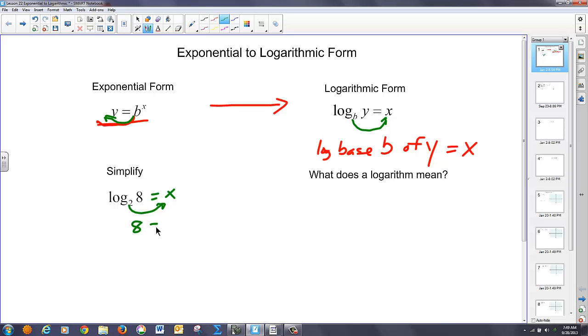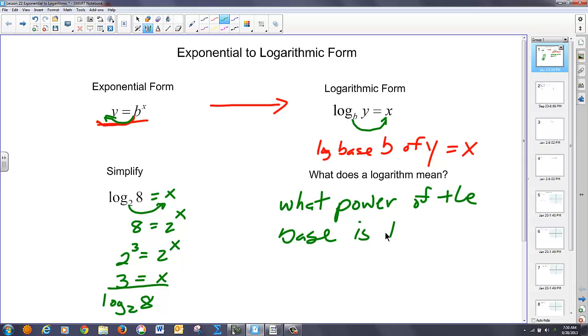So if I slide that, I have 8 equals 2 to the x power. We have an exponential form like we had yesterday, but the problem is the two bases aren't the same. But I can make 8 into a base of 2 simply by going 2 to the 3rd equals 8. So if 2 to the 3rd equals 2 to the x, then x equals 3. And that is equivalent to the log base 2 of 8. So you'll notice a relationship here that 8 is 2 cubed, and that happens to be the answer. So what logarithm actually means is what power of the base is the number. What power of 2 is 8? It's the 3rd power.